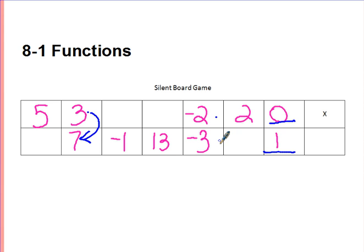The rule in this one was to actually take x, multiply it by 2, and then add 1. 3 times 2 is 6, 6 plus 1 is 7. Negative 2 times 2 is negative 4.